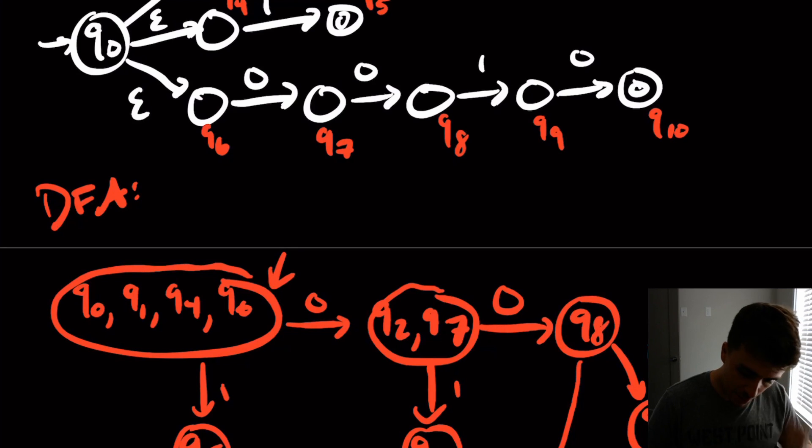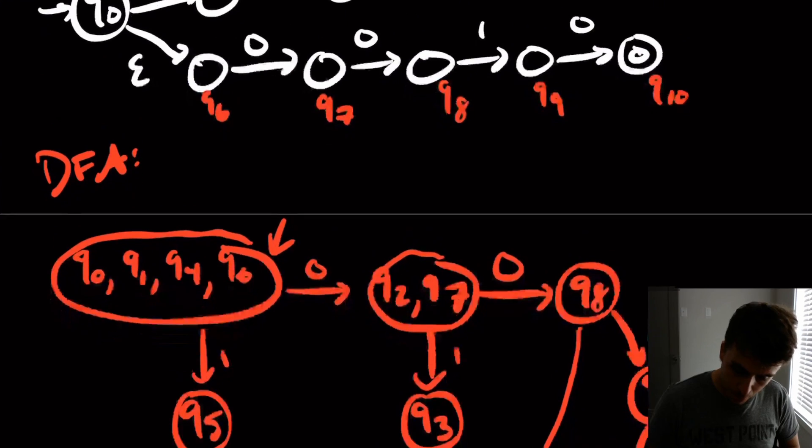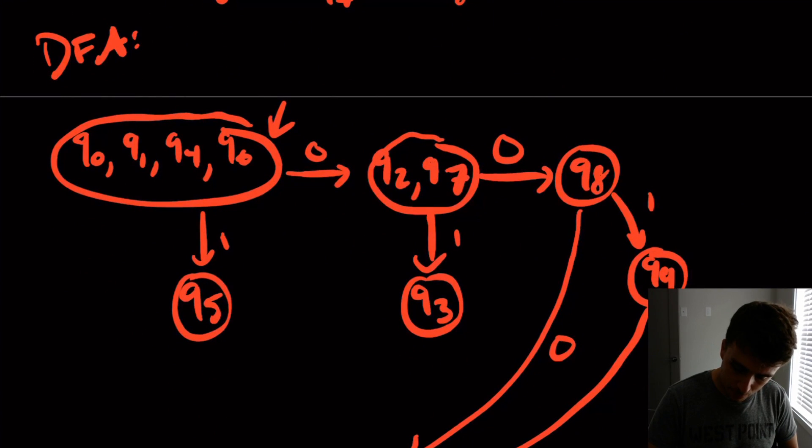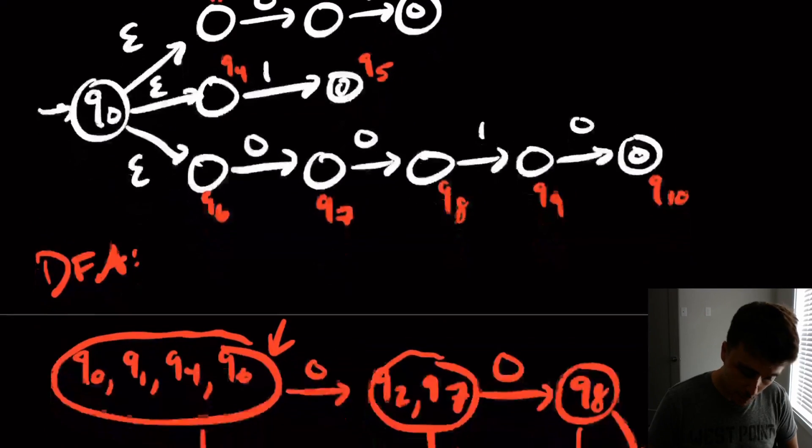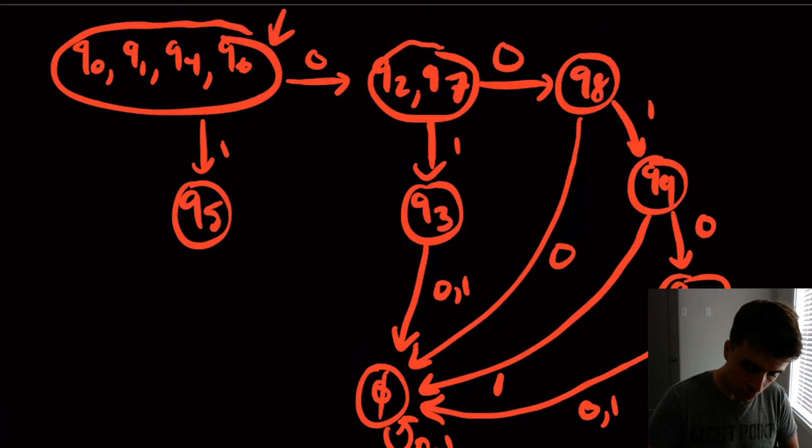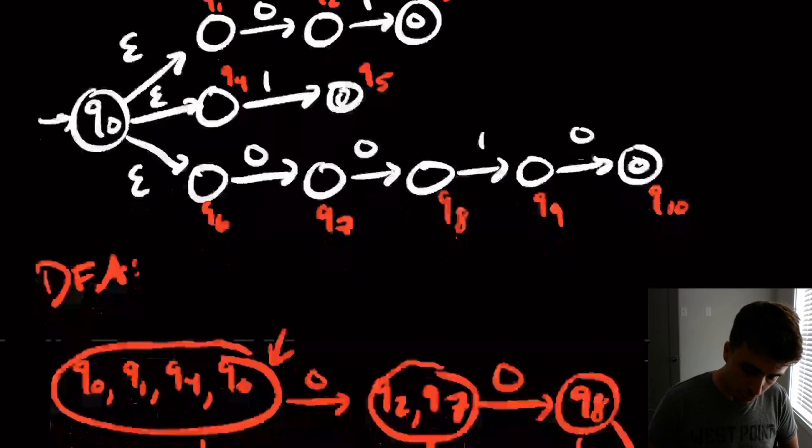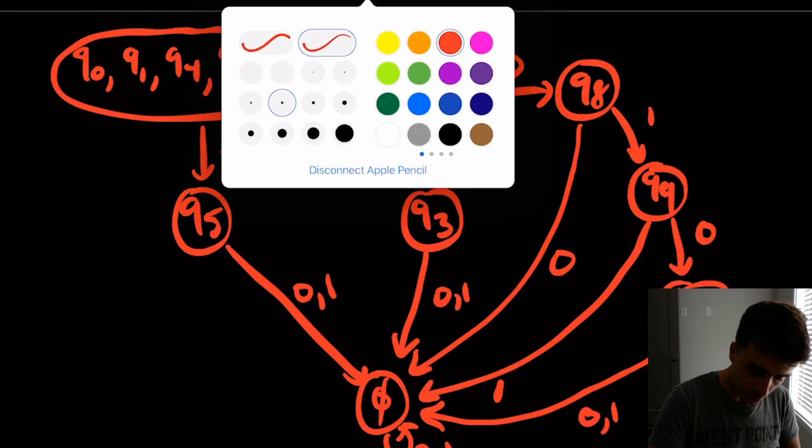On input 1 from q9, we go to the dead state. On input 0 from q9, we go to q10. And from q10, reading anything, you go to that dead state. And from q3, if you read anything, you go to the dead state, which is good. And if you're in q5, if you read anything, you go to the dead state.